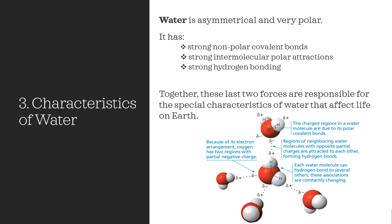The third aspect is water. Water is asymmetrical and very polar. It also has strong covalent bonds, strong intermolecular attractions and strong hydrogen bonding. Together, these last two forces are responsible for the special characteristics of water that affect life on Earth. Specifically, you have to know the structure of the water molecule and understand the main trends — namely which bonds are there inside the molecules as well as between them. I have included a picture where the main key points are summarized. Please pause the video and look at this picture and the inserted text carefully.